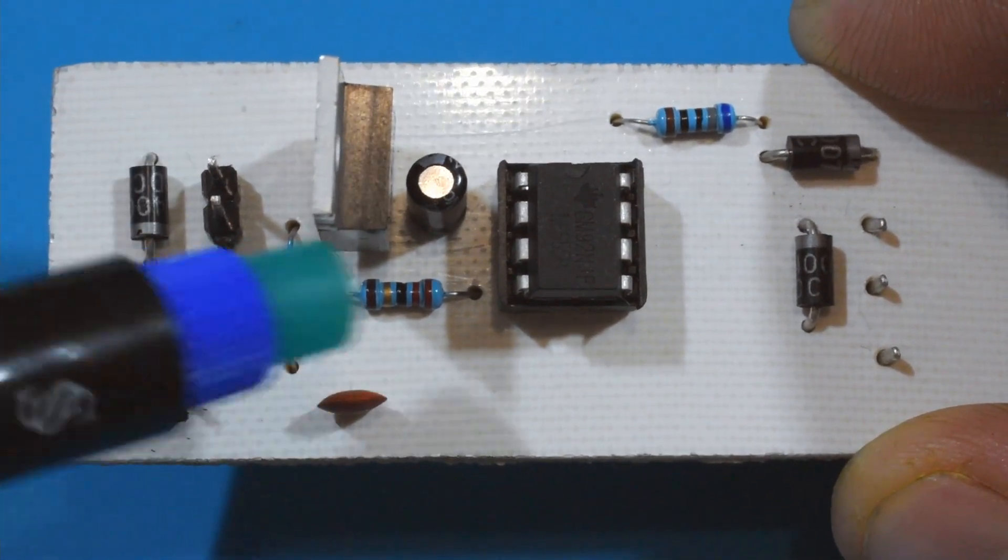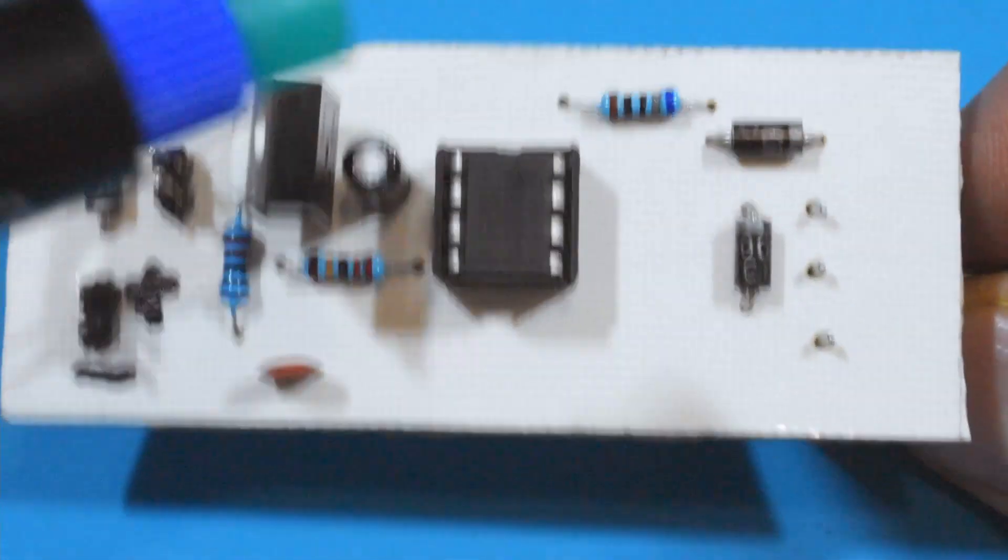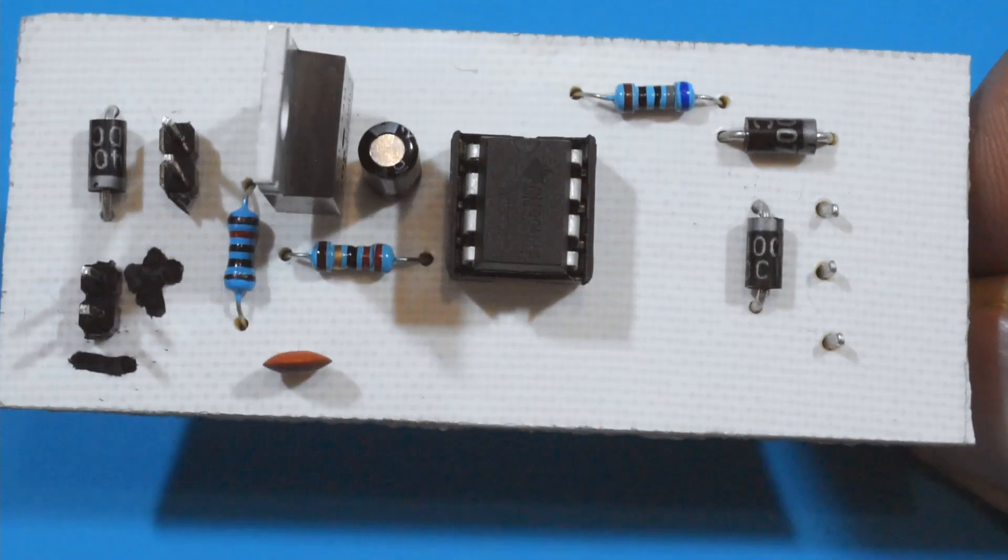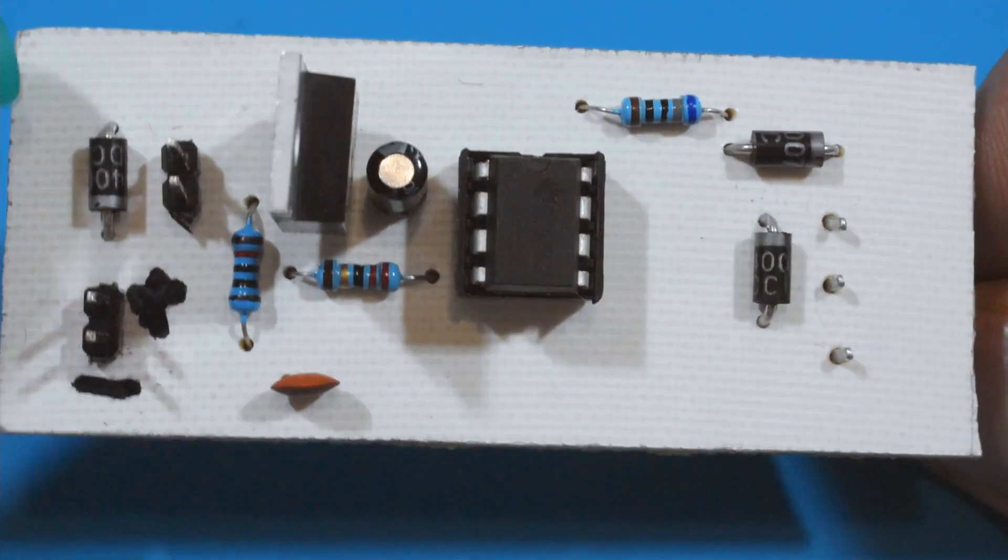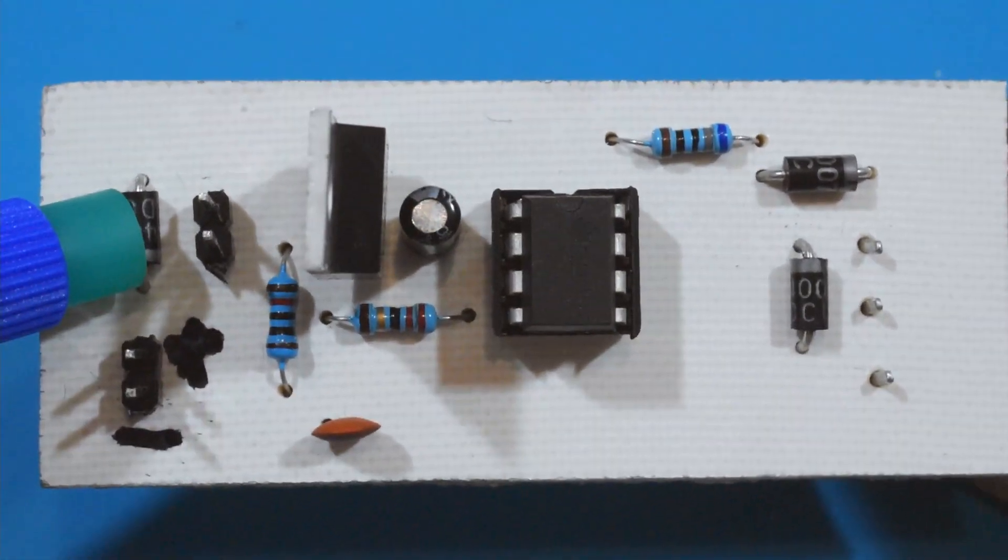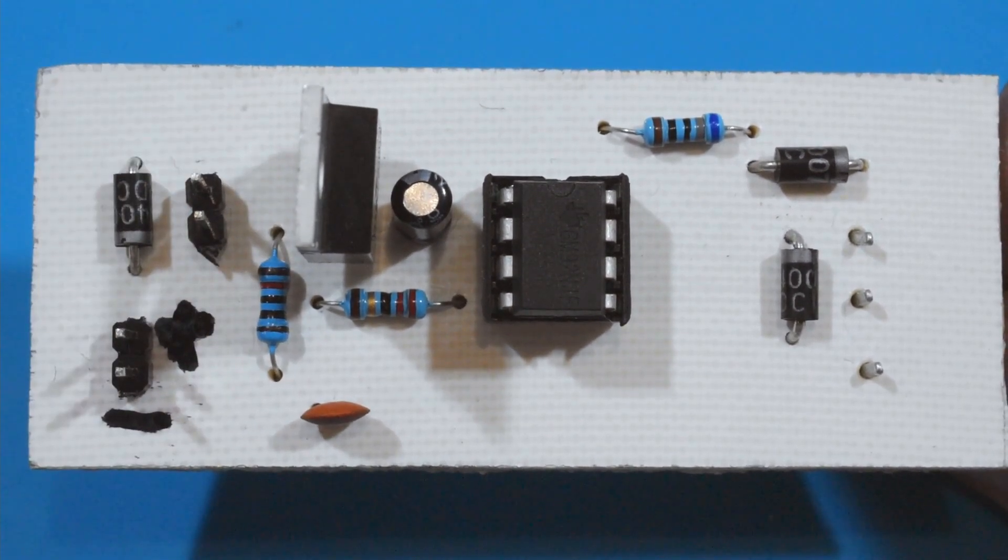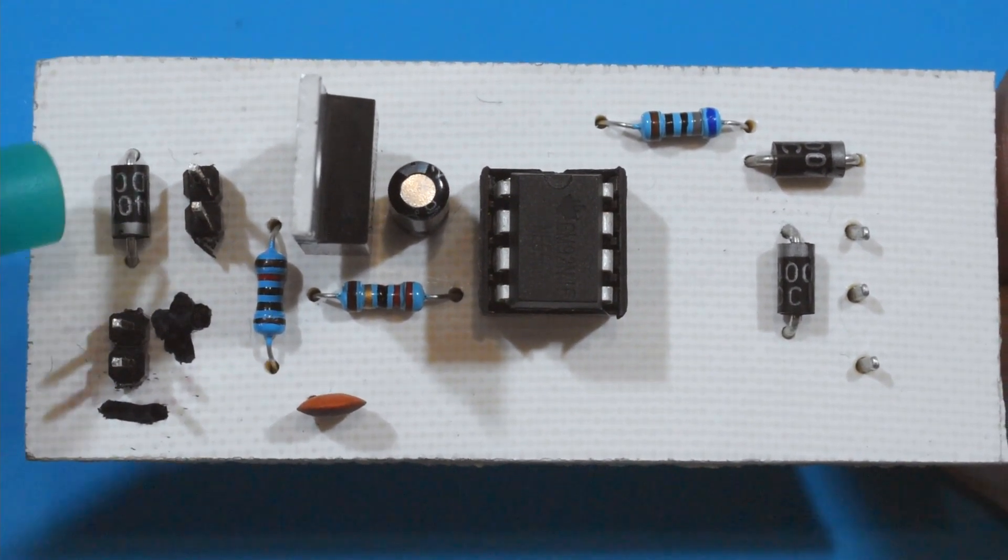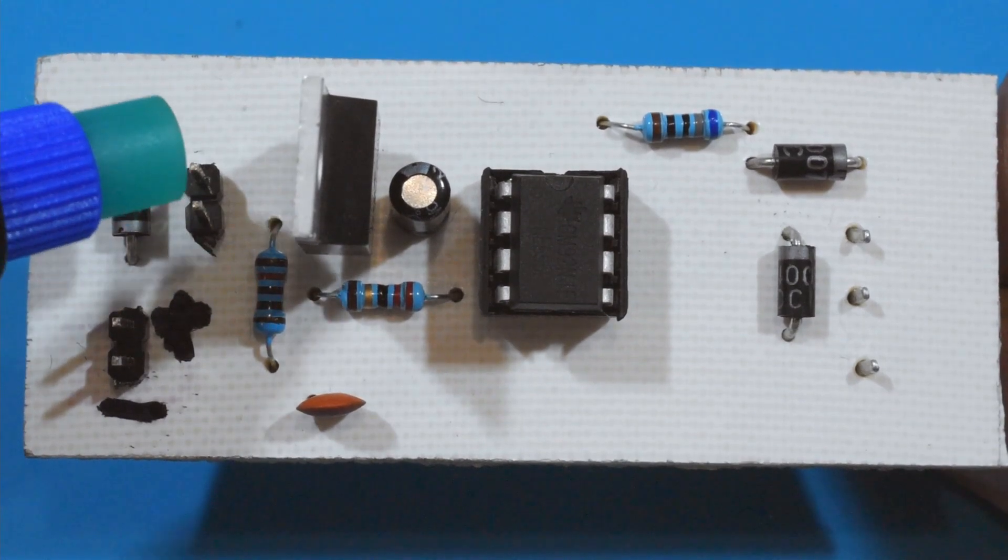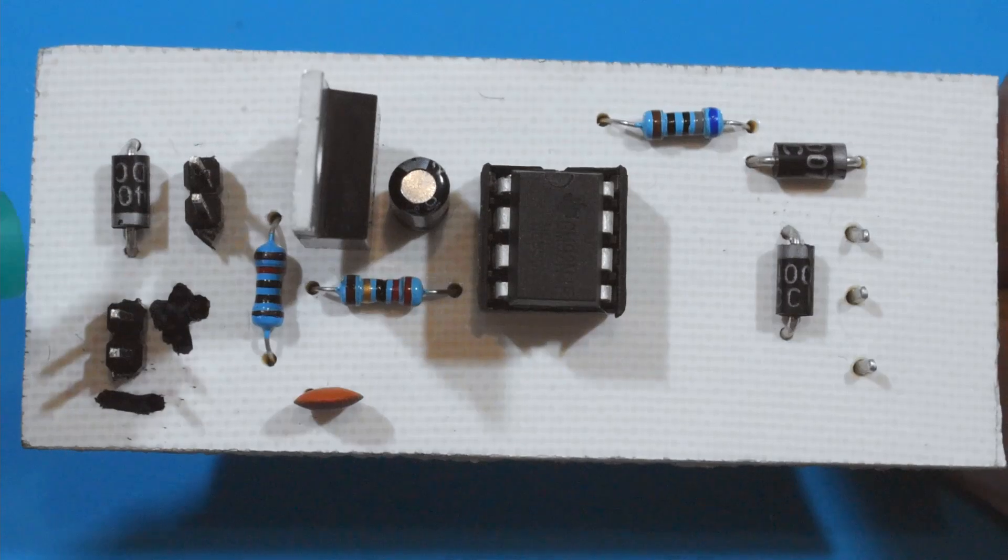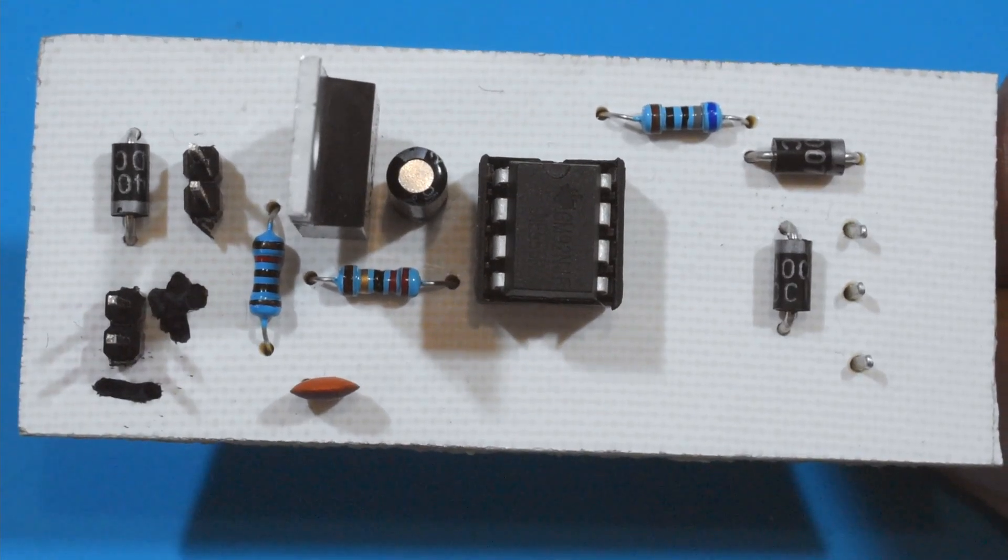So yes, this is the potentiometer. This is the 555 timer. This is an IRF Z44N MOSFET. This is the flyback diode that's here. And these are the motor pins. It really doesn't matter how you connect them because it's a brushed DC motor. But over here, I don't want to mix up the polarity again. So yeah.